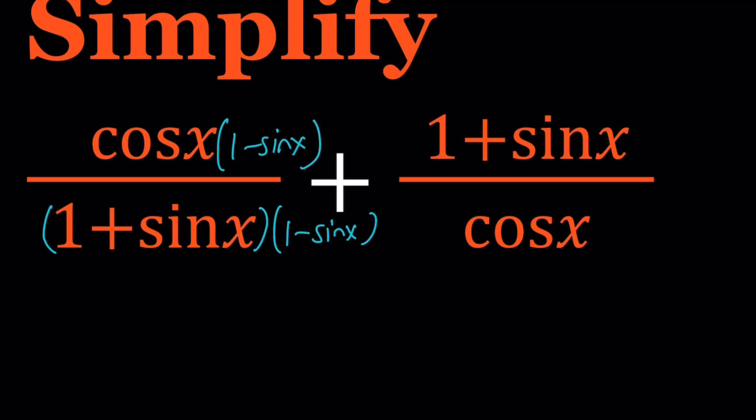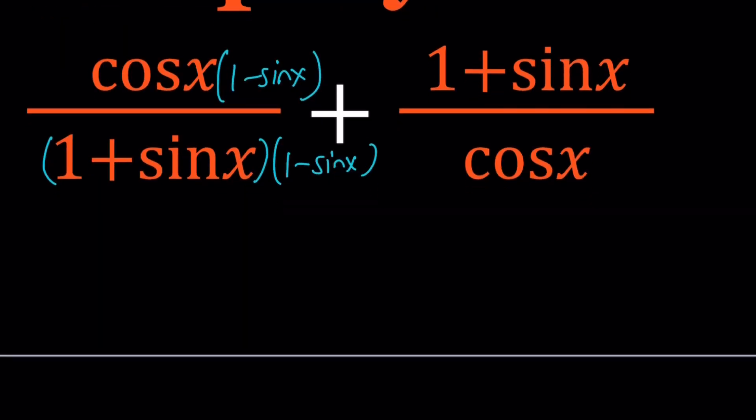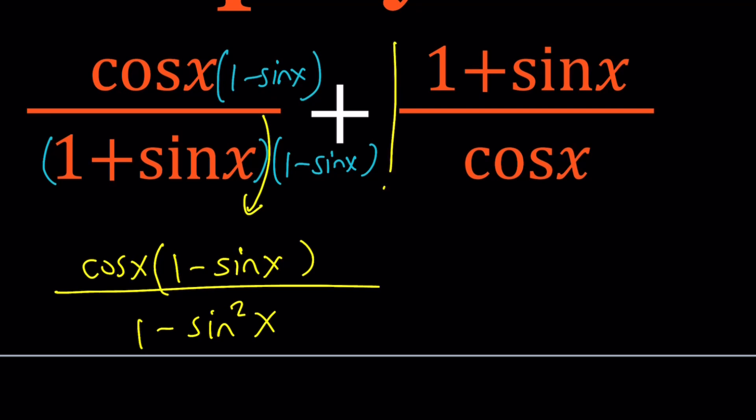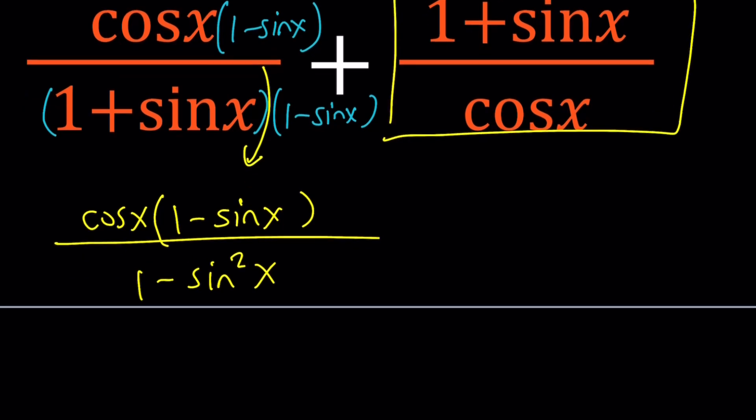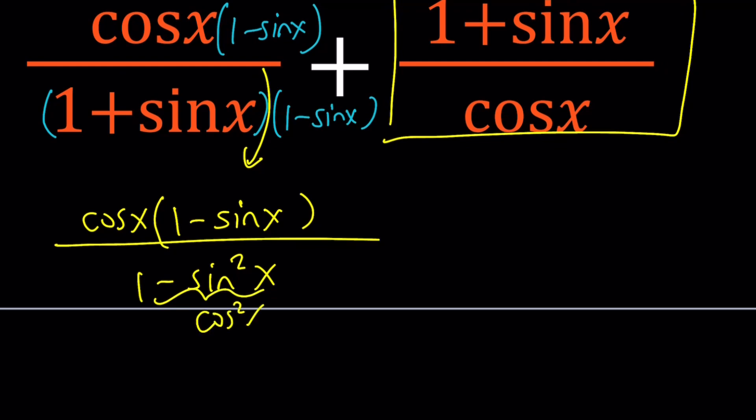And if you do that, you're going to get the following. Cosine x is going to be multiplied by 1 minus sine x, and then at the bottom, we're going to get 1 minus sine squared x. Now, 1 minus sine squared is cosine squared x. That's going to cancel out one of them, at least. We're going to end up with cosine x at the bottom.